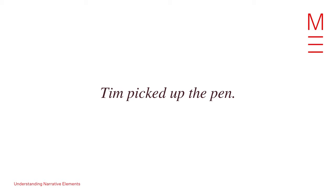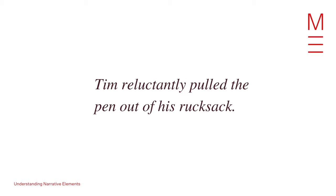Let's look at an example that engages with complex characterization. We'll start with a neutral base — no connotations: 'Tim picked up the pen.' From this simple tell-not-show action, we're made aware of a basic action but know nothing about the person or the act. Now let's make it more exciting: 'Tim reluctantly pulled the pen out of his rucksack.' From this we know that whatever the pen will be used for is an activity Tim isn't really keen on doing.